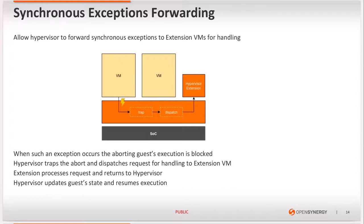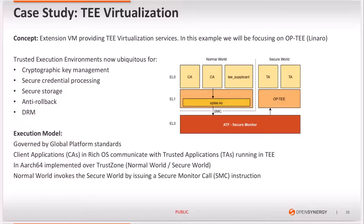With all the background covered, I'll now provide an example showing how all these work together. This example shows how we can use a Unikernel-based extension VM to provide TEE virtualization services. TEE stands for Trusted Execution Environment. TEEs provide platforms with a secure environment that can be used to protect secrets and perform operations on them — if the system is compromised, the secrets remain protected by the TEE.